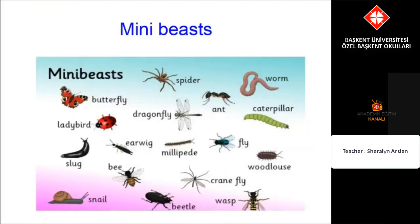Let's look at some mini beasts. Mini beasts include things such as spiders, worms, butterflies, dragonflies, ants, caterpillars, ladybirds, earwigs, millipedes, flies, woodlice, slugs, bees, crane flies, snails, beetles and wasps. These are all mini beasts.